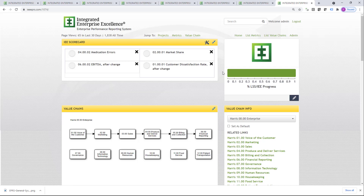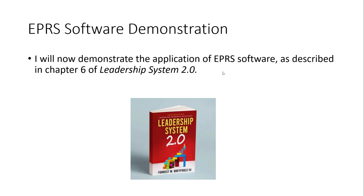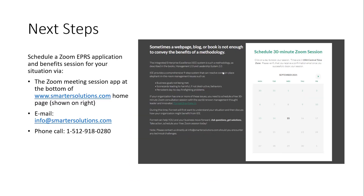Hopefully this brief video gives you some highlights of the EPRS system in a fashion that you can see the value for your organization. As I mentioned, what I just described is also detailed in Chapter 6 of Leadership System 2.0. If the EPRS system seems like something that could be beneficial in your organization, I suggest you schedule a Zoom meeting with me. This Zoom session can be scheduled automatically through the Zoom app located at the bottom of our homepage, SmarterSolutions.com. You could also email us or give us a phone call. Thank you.